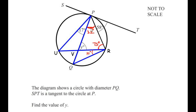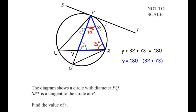Now let us focus on triangle PRV. Using the angle sum property of a triangle, angle V (which is y) plus angle P (32 degrees) plus angle R (73 degrees) equals 180 degrees. Taking the known values to the other side: y equals 180 minus 32 minus 73. Simplifying, we get the final value of y as 75 degrees.